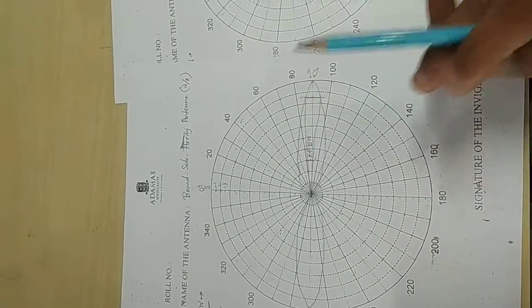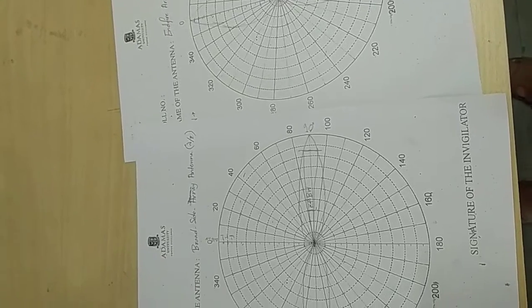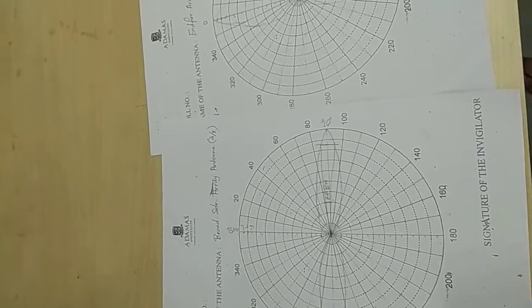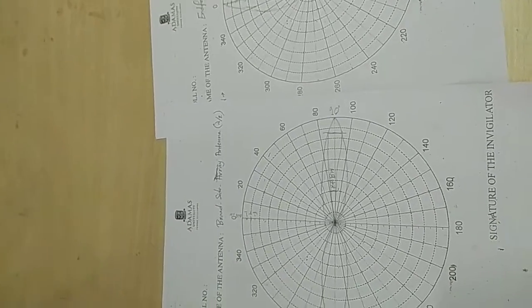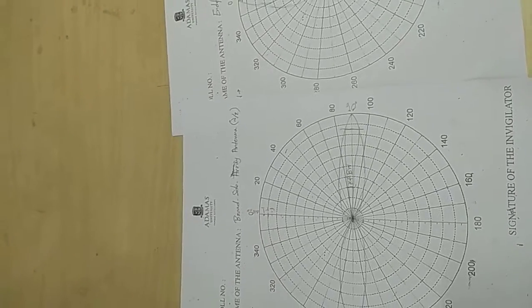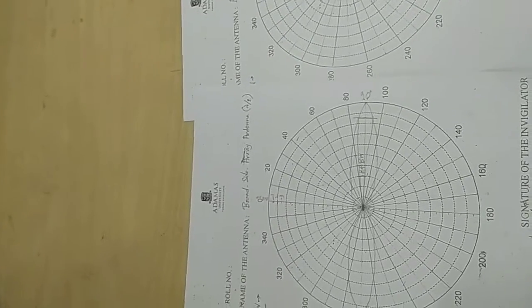This is the basic difference between broadside array antenna and end fire antenna. Their mounting will look almost similar, but their radiation patterns will be different.